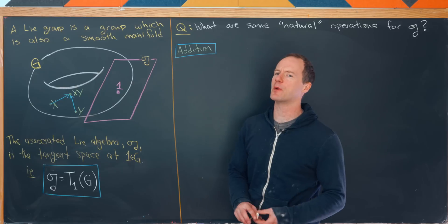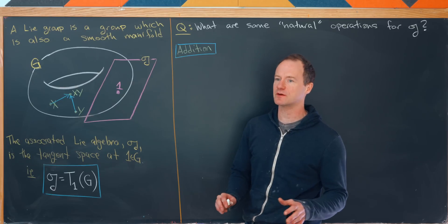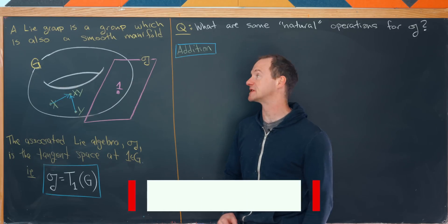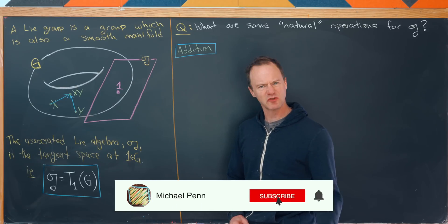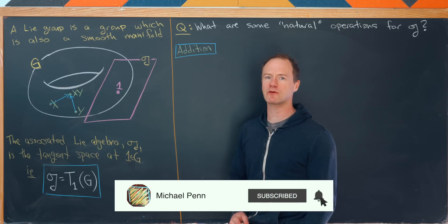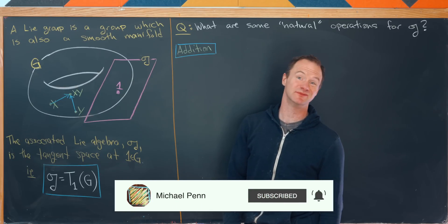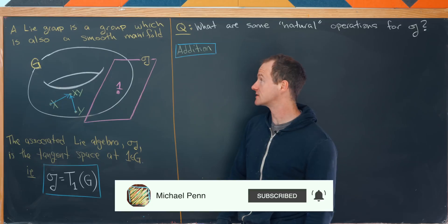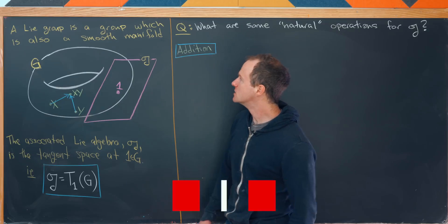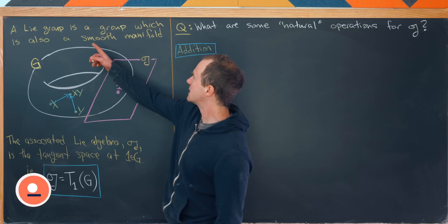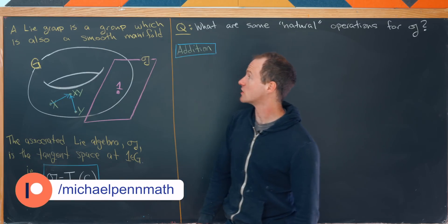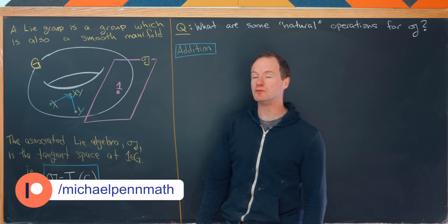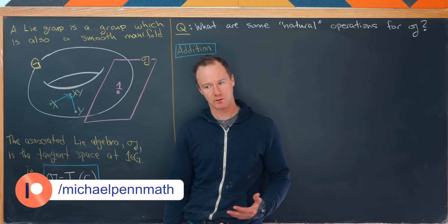It's time for another video about my favorite subject, Lie Groups and Lie Algebras. So let's start by recalling some definitions. A Lie Group is a group which is also a smooth manifold.